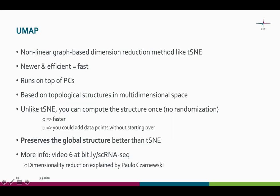UMAP is another non-linear graph-based dimension reduction method like TSNE. It's a bit newer and very efficient, so it's very fast. It also runs on top of the principal components and is based on topological structures in multidimensional space. Unlike TSNE, you can compute the structure once — there's no randomization step, which makes it faster, and you could in theory add data points without starting over. It also preserves the global structure better than TSNE. If you want to learn more about TSNE or UMAP, consider checking video number 6 on the single-cell RNA-seq playlist, where Paolo Czernevski explains the different methods very nicely.